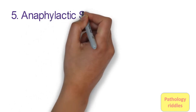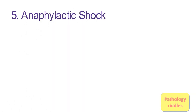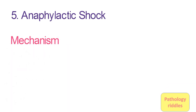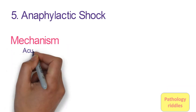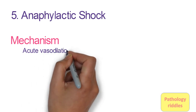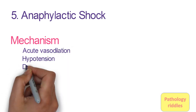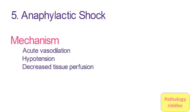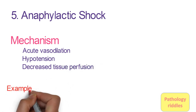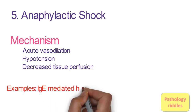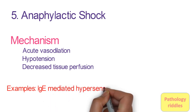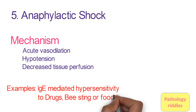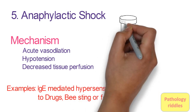The fifth type of shock is anaphylactic shock. The mechanism is similar to neurogenic shock — there will be acute vasodilation, fall in blood pressure, and decreased blood supply to the tissues, that is tissue hypoperfusion. It is mainly caused because of IgE, that is immunoglobulin E, mediated hypersensitivity to drugs, bee sting, or food.